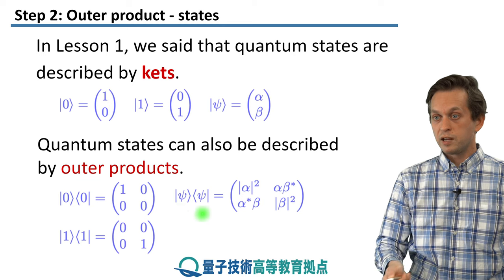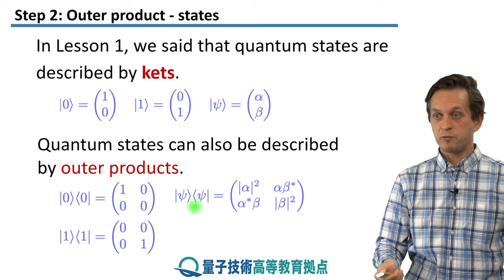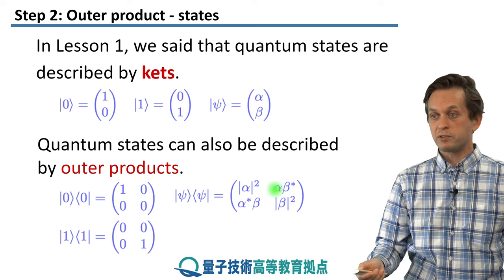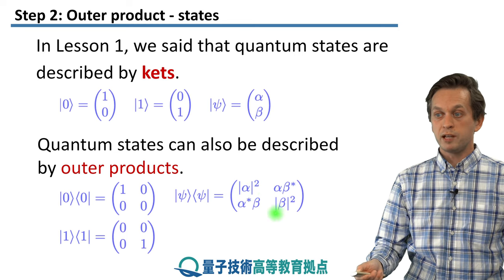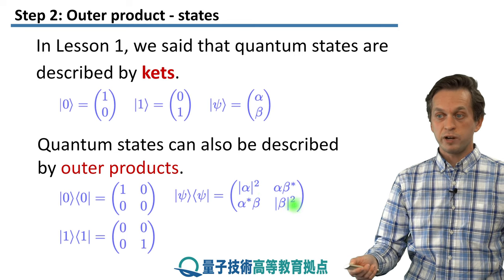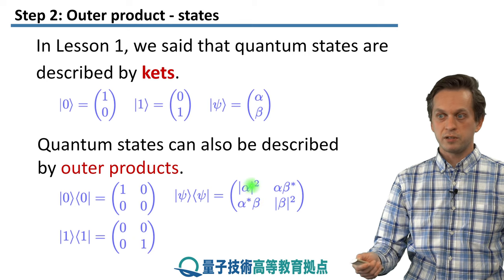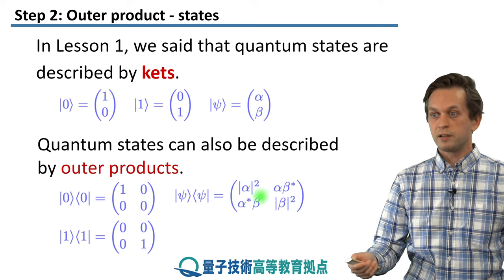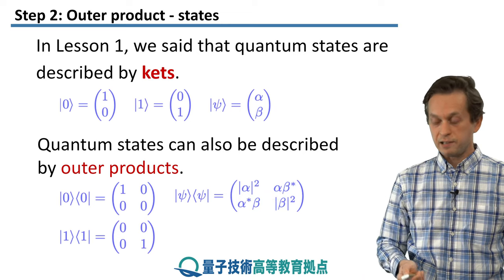So, for an arbitrary state psi, we can form the outer product of the state psi with itself. And we get the following matrix. On the diagonals, we've got mod alpha squared and mod beta squared. If you notice, these are real numbers because we're taking the mod and squaring it. But the off diagonals, they are complex scalars.